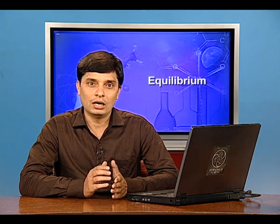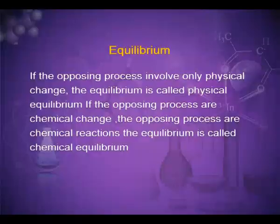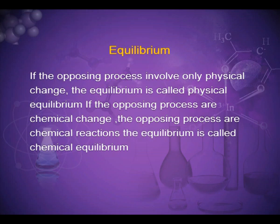If the opposing processes involve only physical change, the equilibrium is called physical equilibrium. If the opposing processes are chemical changes — that is, the opposing processes are chemical reactions — the equilibrium is called chemical equilibrium.